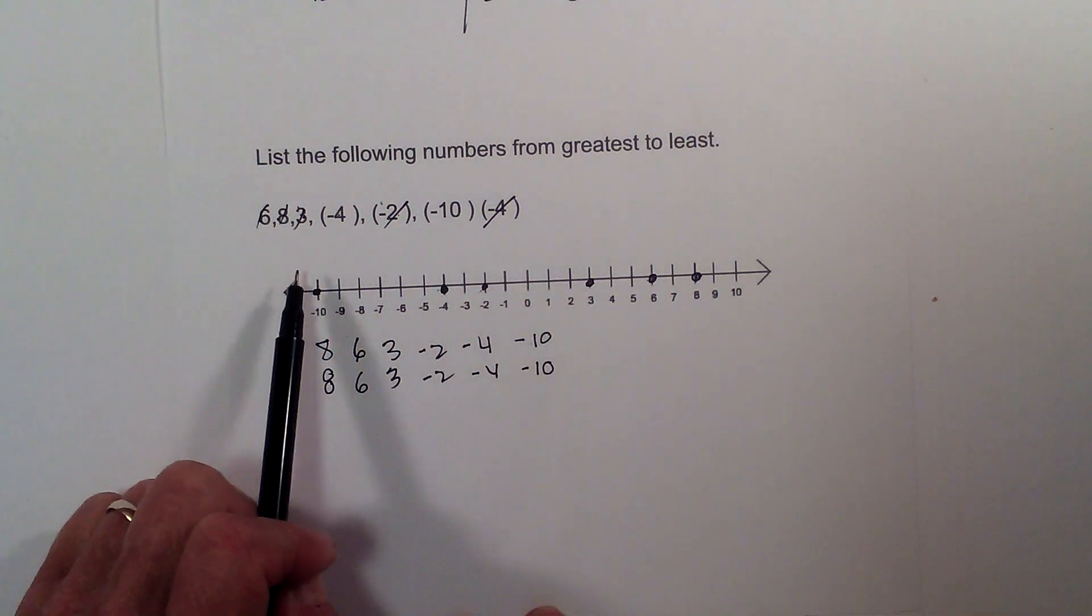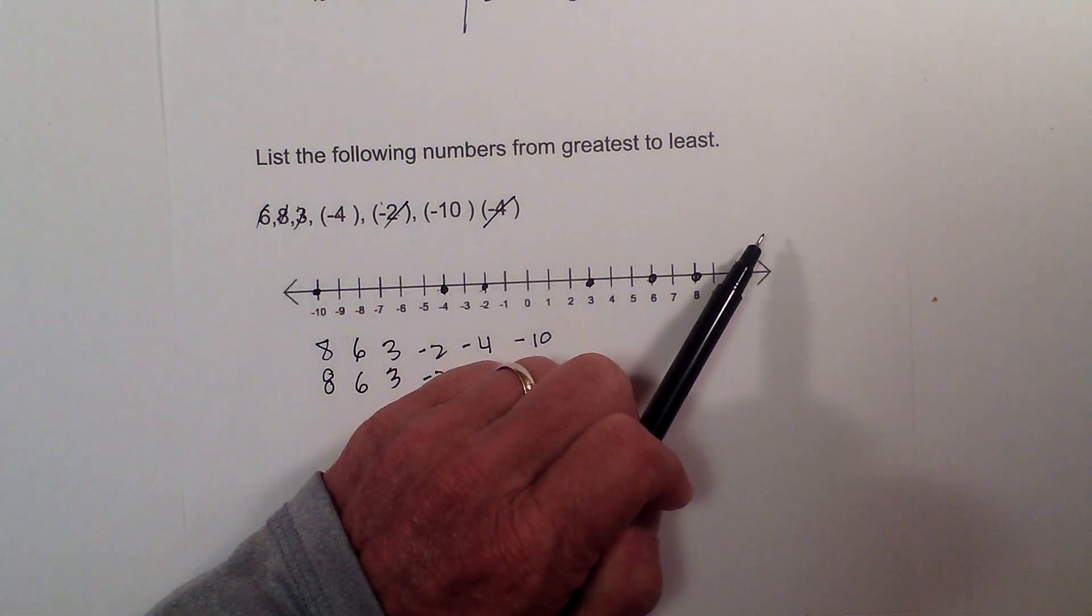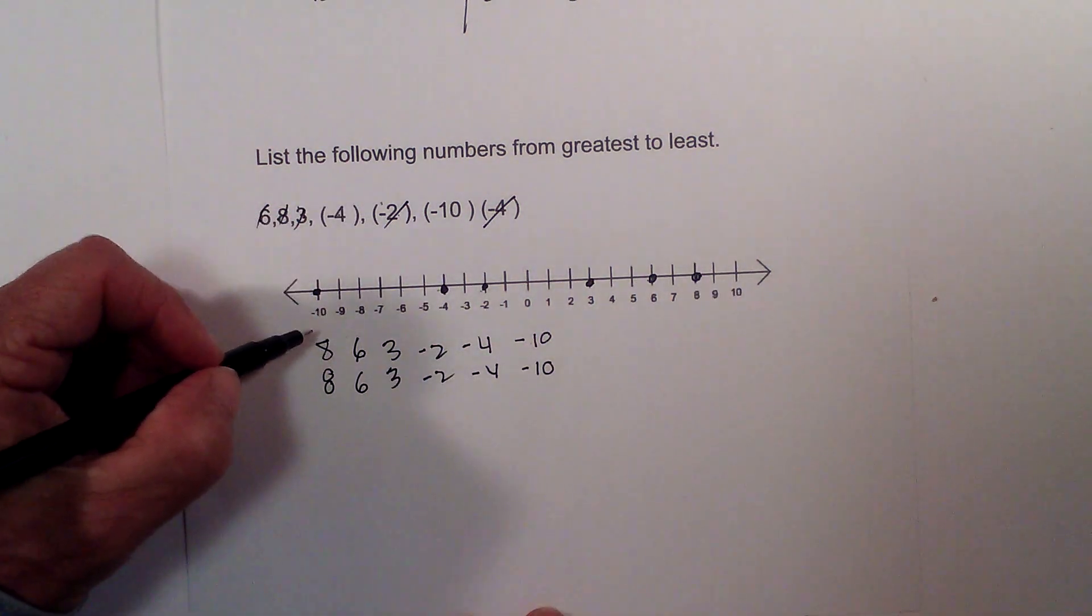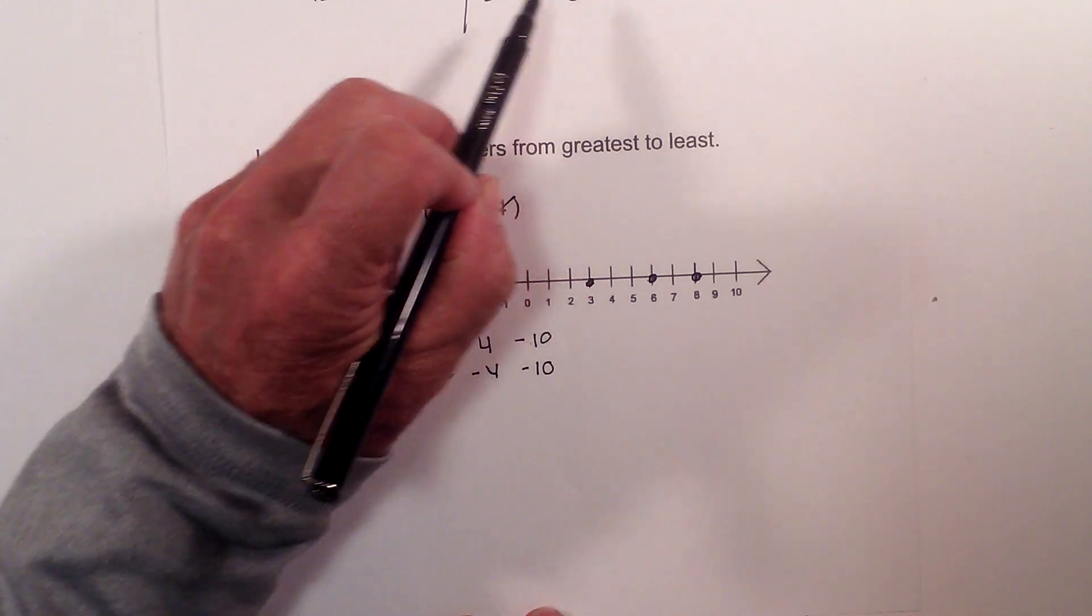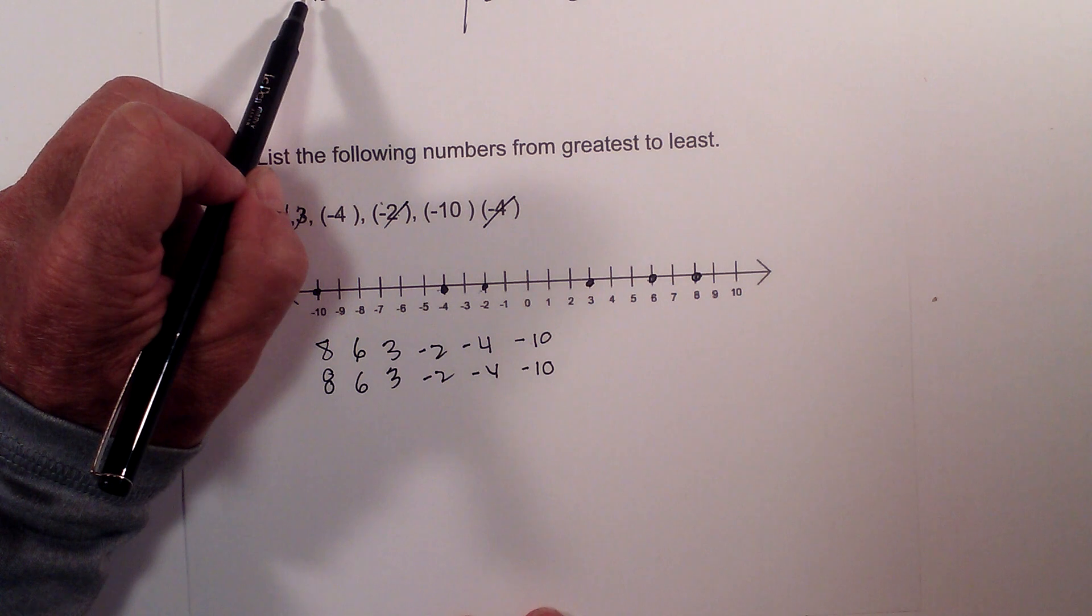So in summary, on the number line, the left is smaller than the right. If it's a positive number, the larger the number, the larger. If it's a negative number, the larger the number, the smallest.